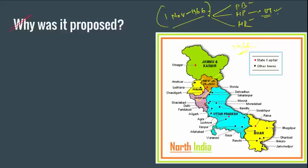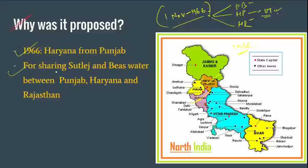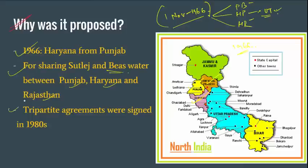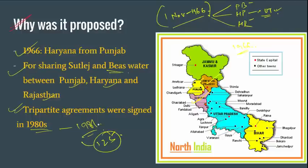When Haryana came into existence, the demand arose that it should be given a share in the water that Punjab was having, so as to ensure water security and food security for the future. So all this demand started from 1966 for sharing Satluj and Beas waters — Beas being a tributary of Satluj — between Punjab, Haryana, and Rajasthan. Rajasthan also comes into the picture but as a minor beneficiary. A tripartite agreement was signed between these parties in 1981, so we are discussing an issue which is very old.